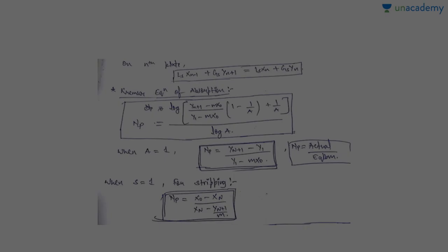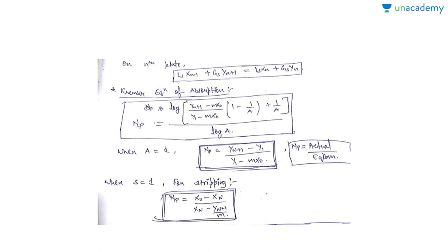Applying the material balance on the nth plate: the inlet streams are Ls·X(n-1) for liquid and Gs·y(n+1) for vapor, and the outlet streams are Ls·Xn and Gs·Yn. In this manner you can specify the material balance on each and every plate.